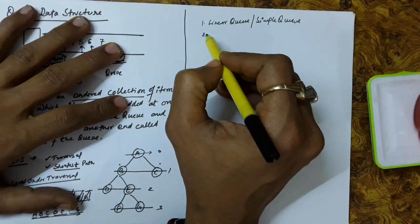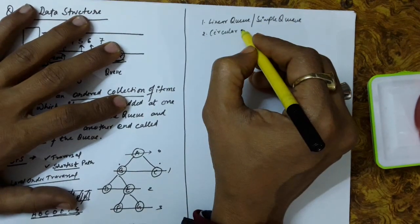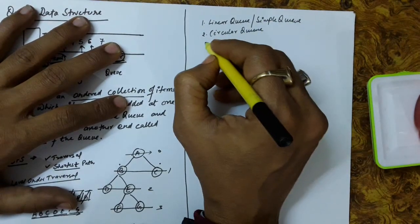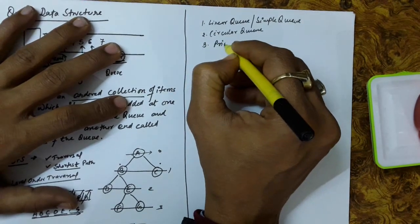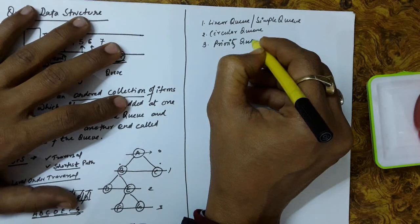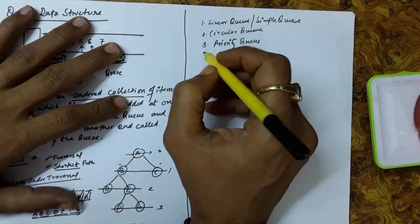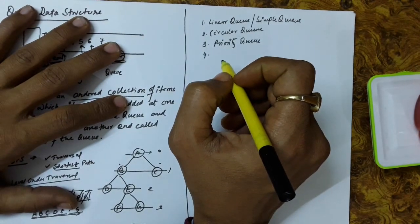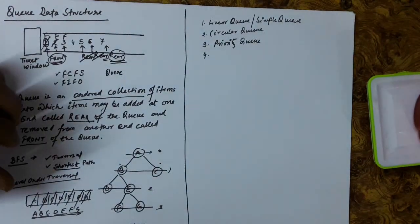Another queue which is possible is a circular queue, which is actually an improvement above the linear queue. Another type of queue is priority queue, where we assign some priority to the items and service is done on the basis of those priorities.